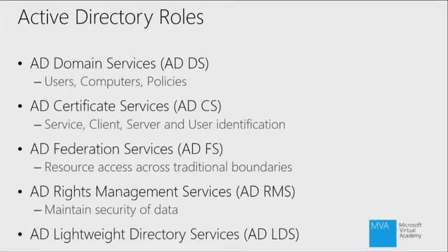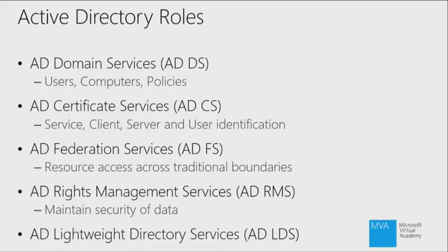We may not cover those in great detail today, but it's what's provided. Federation Services enables resource access across traditional boundaries — allowing resources in my organization to be accessed by security principals in other organizations without needing some of the traditional trust mechanisms. AD Rights Management Services provides a way for me to maintain the security of data both within and outside of my organization. And Lightweight Directory Services is essentially a copy of the structure of Active Directory Domain Services — we'll cover that later in subsequent modules.